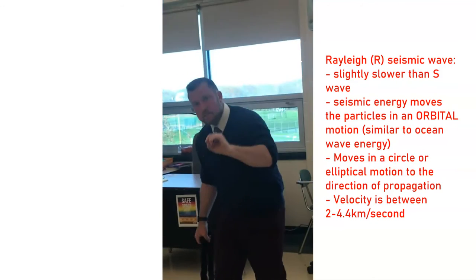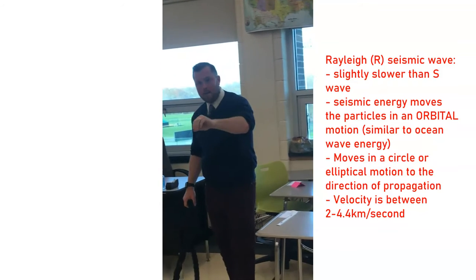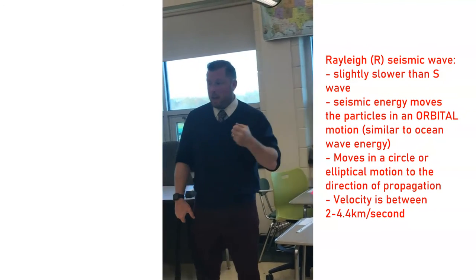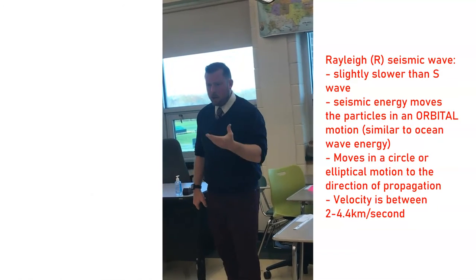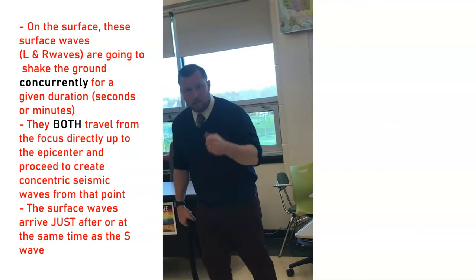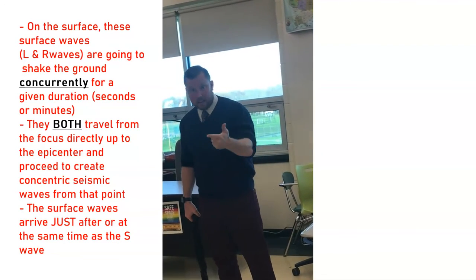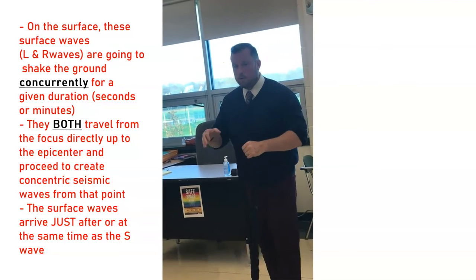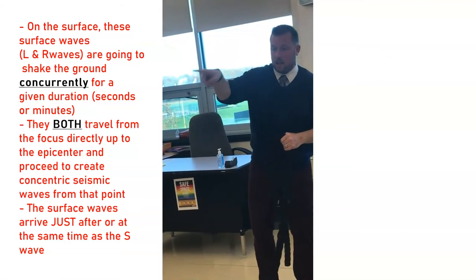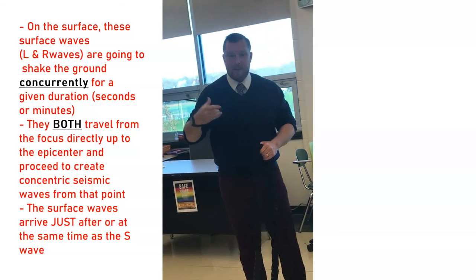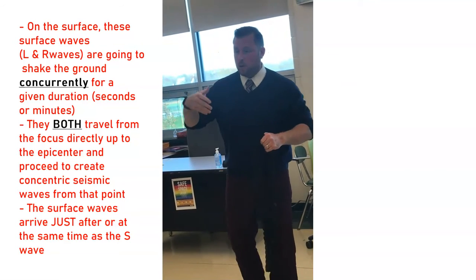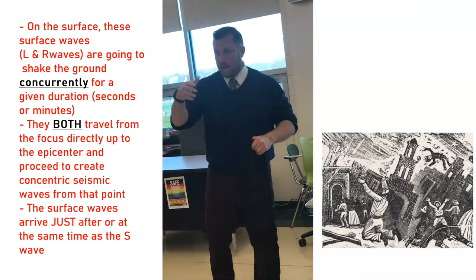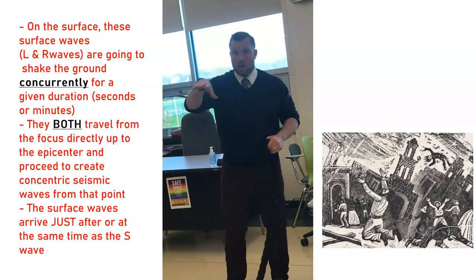The awesome thing is, the L and the R wave combine together when they go through the surface. So the place where the earthquake hits is not only getting the P wave hitting first, then the S wave, but also the L and the R wave combining to move the ground up and down and in a circular motion at the same time. These huge earthquakes can cause a lot of damage because we can't build roads, bridges, and houses to withstand that kind of ground motion.